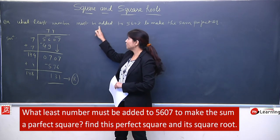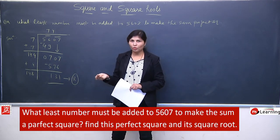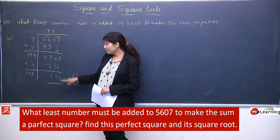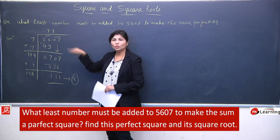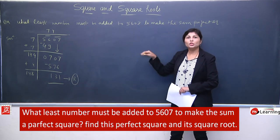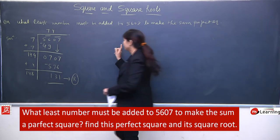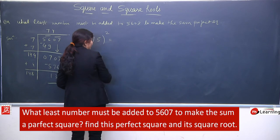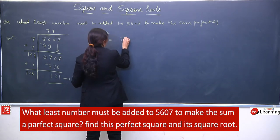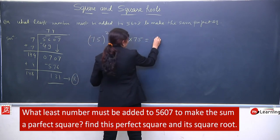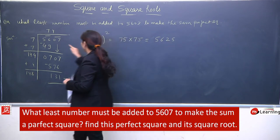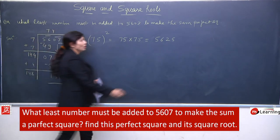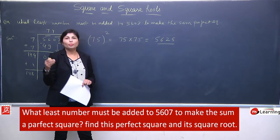But we have 'what number must be added'. Toh yahan ek further step hoga. Nearest hame pata chal gaya ki 74 ka square ho sakta tha yeh number. But ismein yeh additional hai. Ab 74 se ek number zyada — means 74 ka successor — 75 ka square find karenge. 75 × 75 = 5625. Means, yeh number 5607 mein hum kuch add karein toh 5625 ban jayega — and it will be a perfect square.